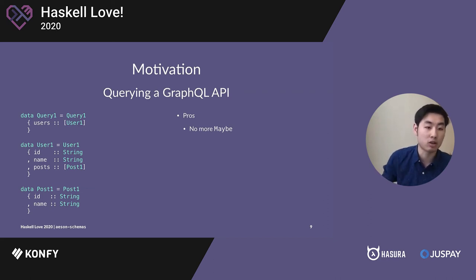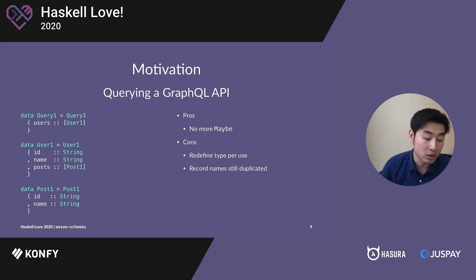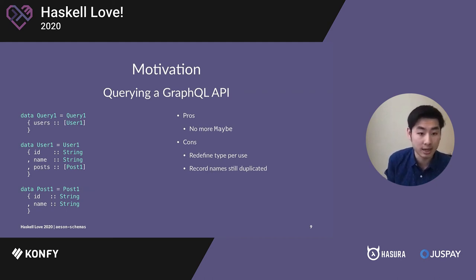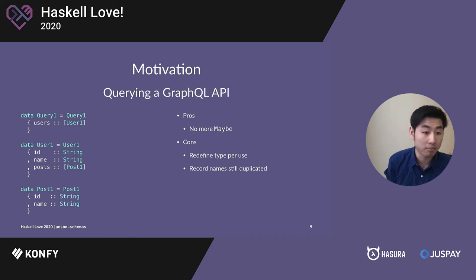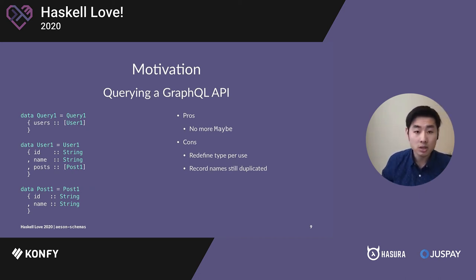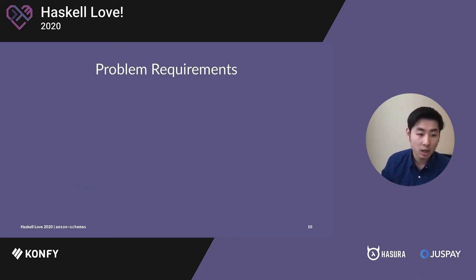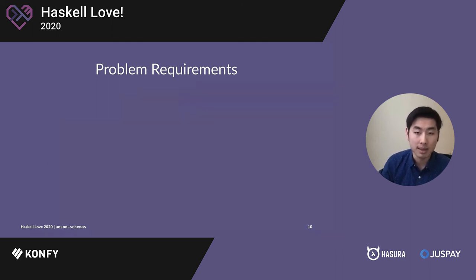Another option is we could define a data type for every time it's used in a query. The benefit is there are no more maybes, because if you send a query and get back a response, you guarantee the response is going to contain that field. The downside is we would have to redefine a type every time you use it in a query. You could use Template Haskell to generate all of these data types, but it definitely won't scale — you would have to import N types every time you make a query, where N depends on the types in the query. And we still have the problem where record names are duplicated, like user and post both still have ID and name fields.